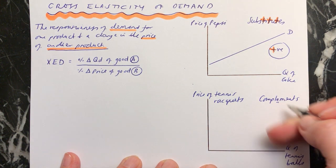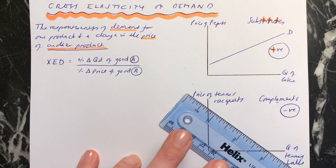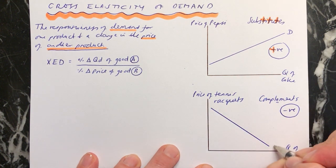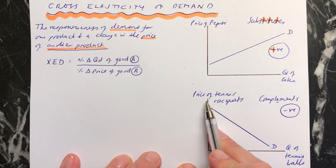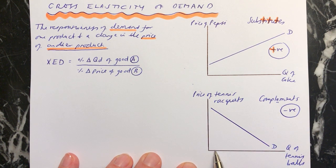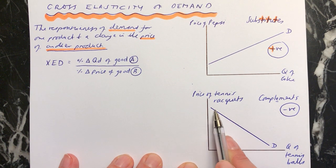Complements have a negative relationship. If you draw your demand curve like this, and we know it's true that if the price of tennis rackets is very high up here, less tennis balls will be demanded, because the tennis rackets are so expensive, not many people buy the tennis rackets.